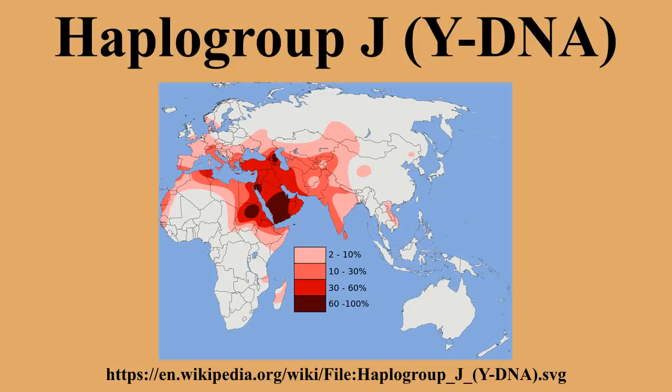JM304 is divided into two main subclades: JM267 and JM172.